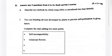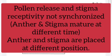Question 7. Two outbreeding devices developed by plants to prevent self-pollination are given below. Complete the chart adding two more points. Answer: 1. Pollen release and stigma receptivity not synchronized. 2. Anther and stigma are placed at different positions.